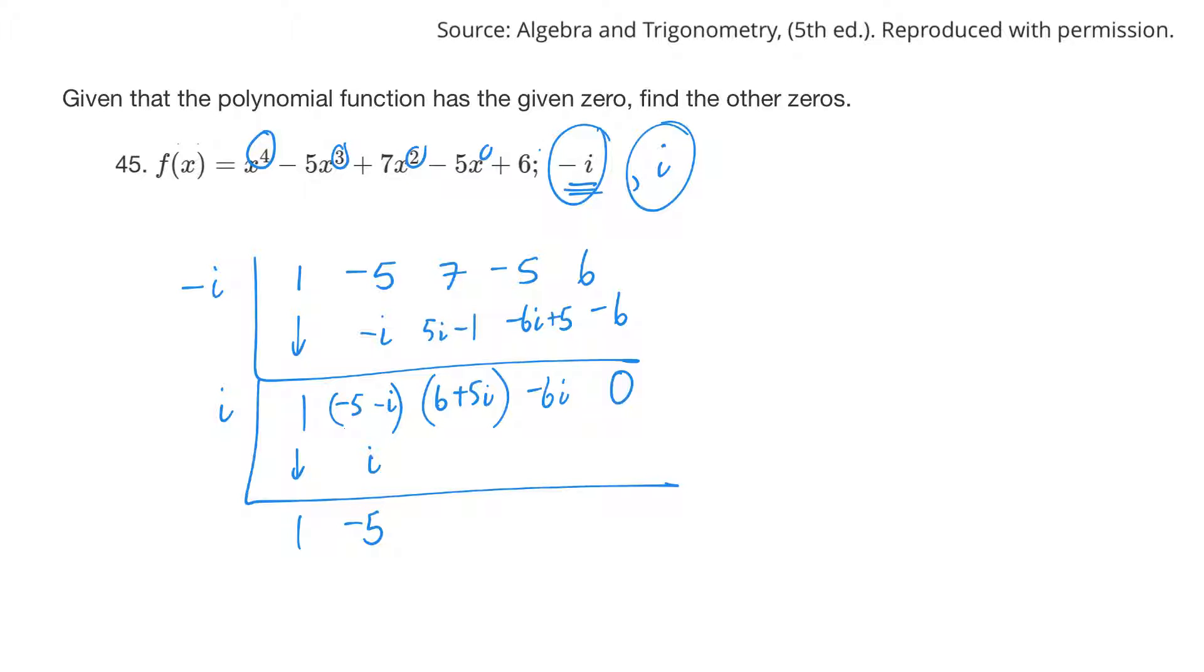Minus 5 times i would be a minus 5i. Add. The 5i and minus 5i cancel again, so this would be 6. 6 times i is 6i. Add. You get 0 again. Nice. So that's your remainder. So just to take stock of what we have.